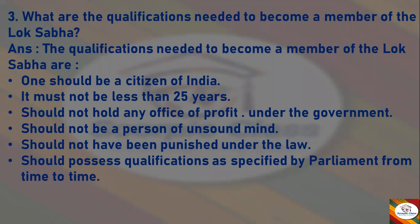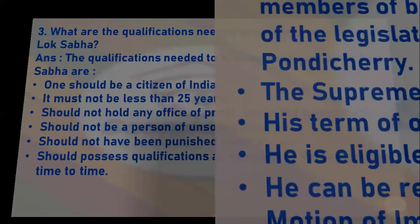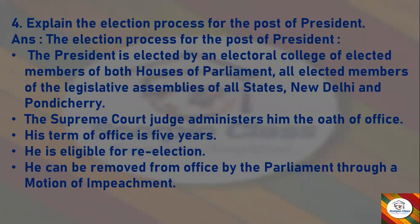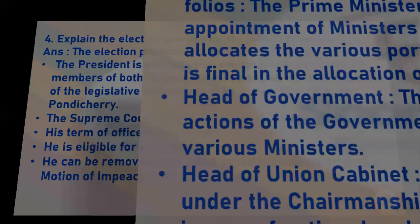Next question: Explain the election process for the post of President. Answer: The President is elected by an electoral college of elected members of both houses of Parliament and all elected members of the legislative assemblies of all states, New Delhi, and Pondicherry. The Supreme Court judge administers the oath of office. His term of office is five years; he is eligible for re-election. He can be removed from office by Parliament through a motion of impeachment.